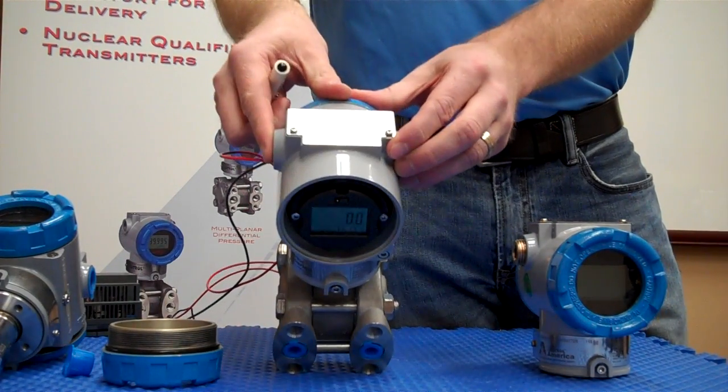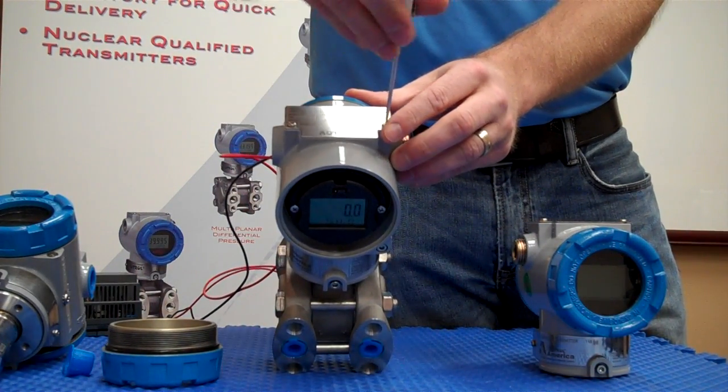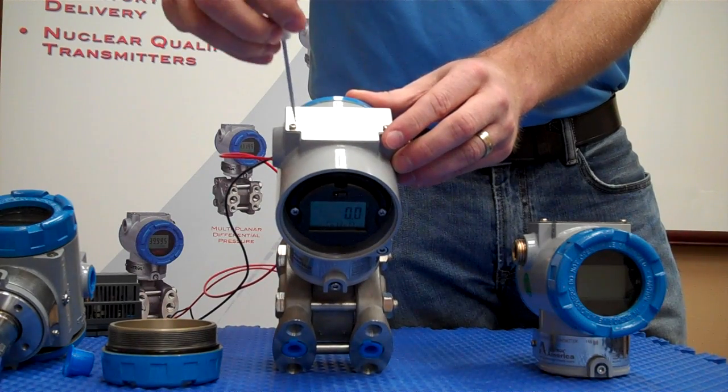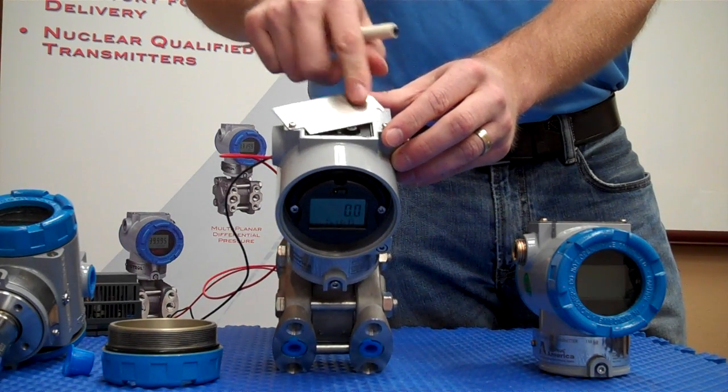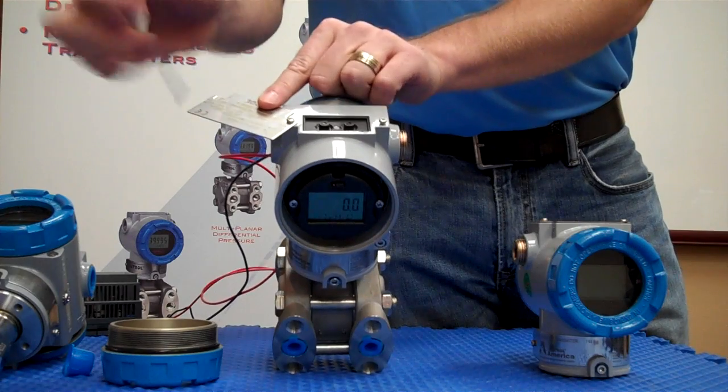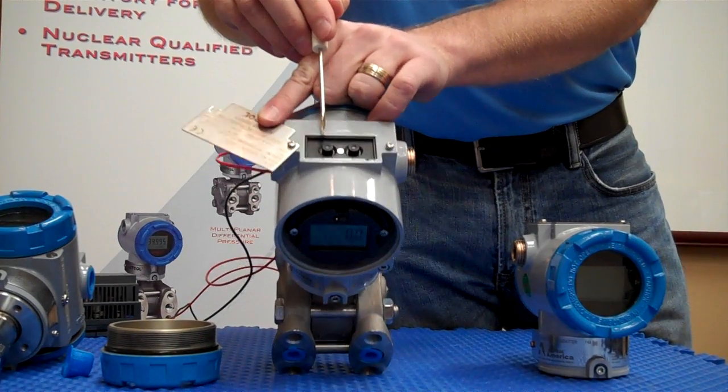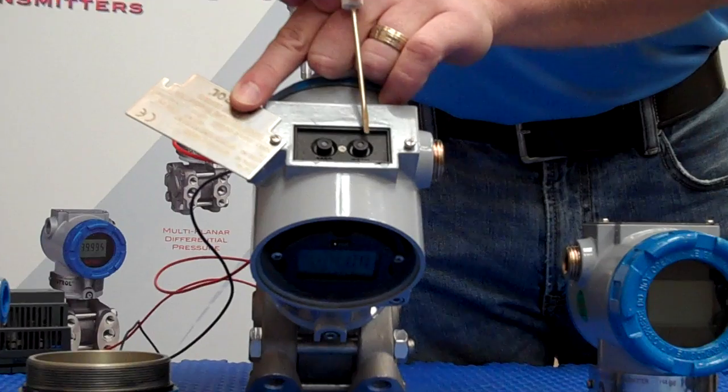First, where are the buttons? They're located under the top cover here, which can be accessed by loosening the two screws. If you slide this back, you will notice that there are two buttons, the one here labeled zero, and the second one labeled span.